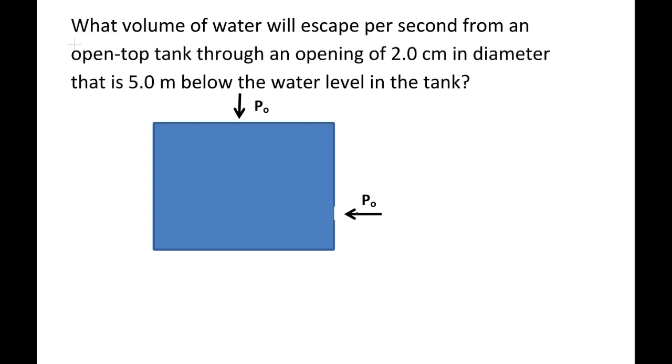With the hole on one side there is atmospheric pressure here. The top of the tank is open-ended so the pressure at this point is also P-naught. So we're looking at this point is point one and this point here at the hole is point two.